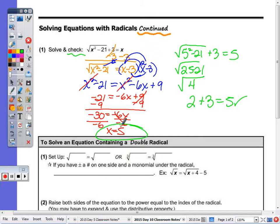Now in the next part, notice step number one. We're going to solve equations that contain a double radical. So there's two radical symbols. If you can, set it up so that you have radical equal to radical, or a cube root equal to a cube root. So if possible, this is how you want to set it up. If you have a highlighter, highlight that.